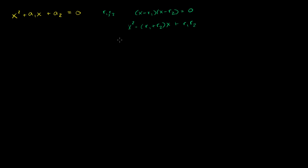We figured out from the last video that r1 plus r2, which appears here, needs to equal the negative of the coefficient a1. So r1 plus r2 equals negative a1. Now let's see if we can use that to figure out what r1 squared plus r2 squared is.